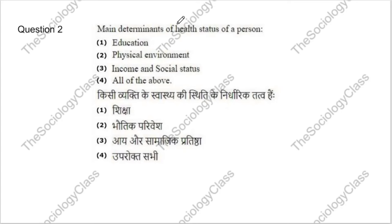Question 2: What are the main determinants of health status of a person? Options: education, physical environment, income and social status, all of the above. The correct answer is all of the above — all these factors determine a person's health status.